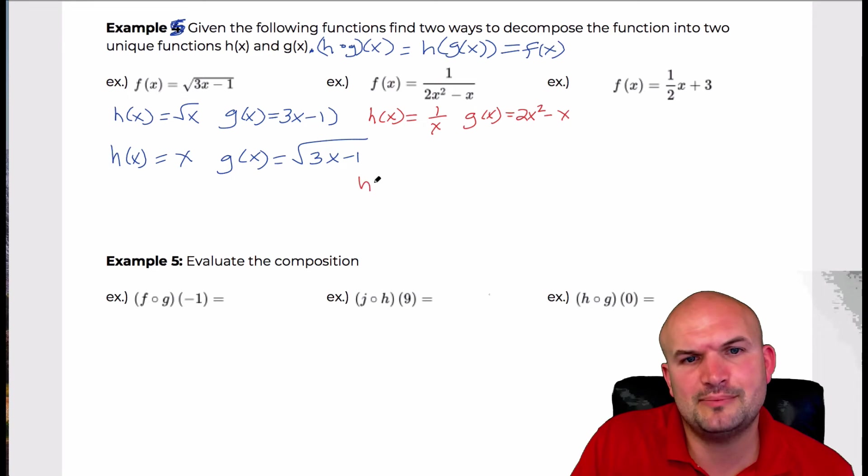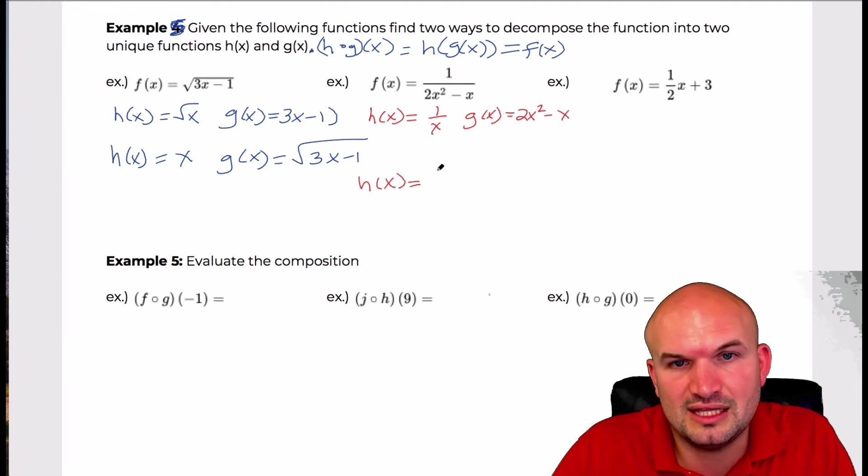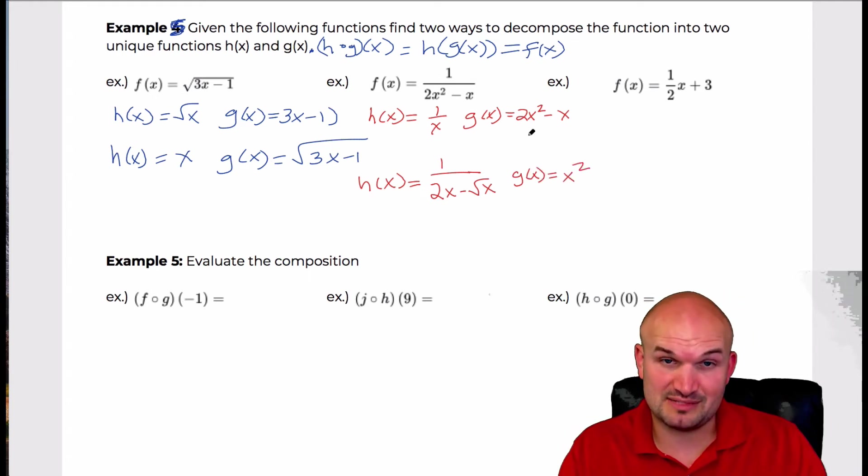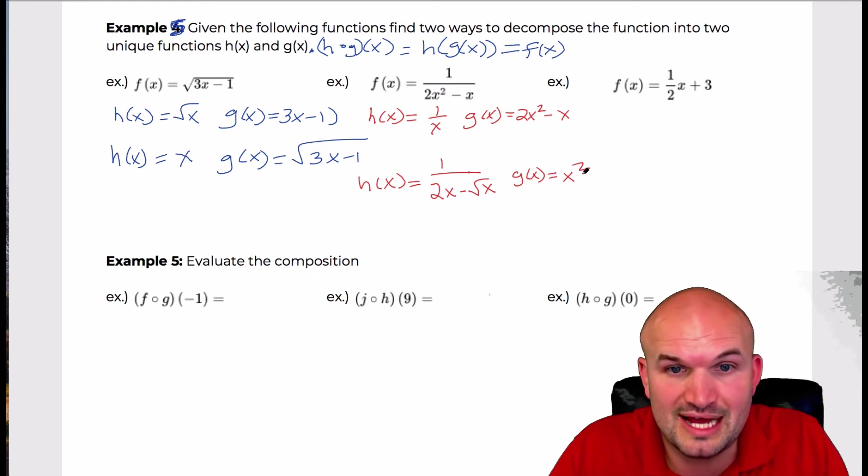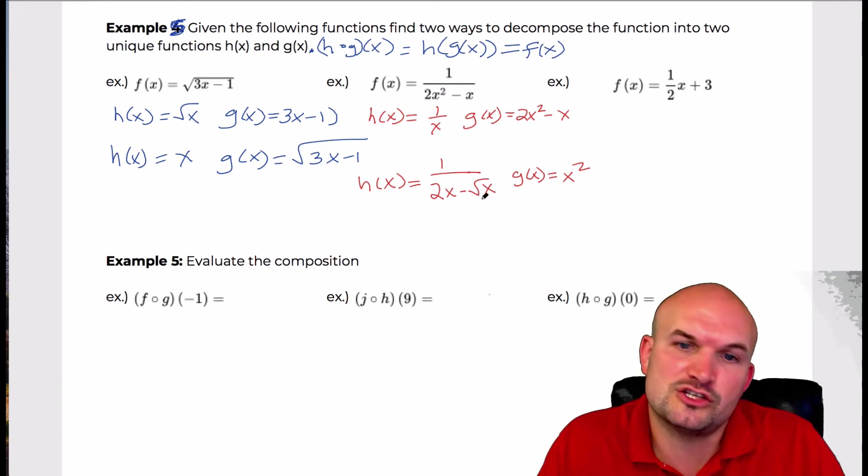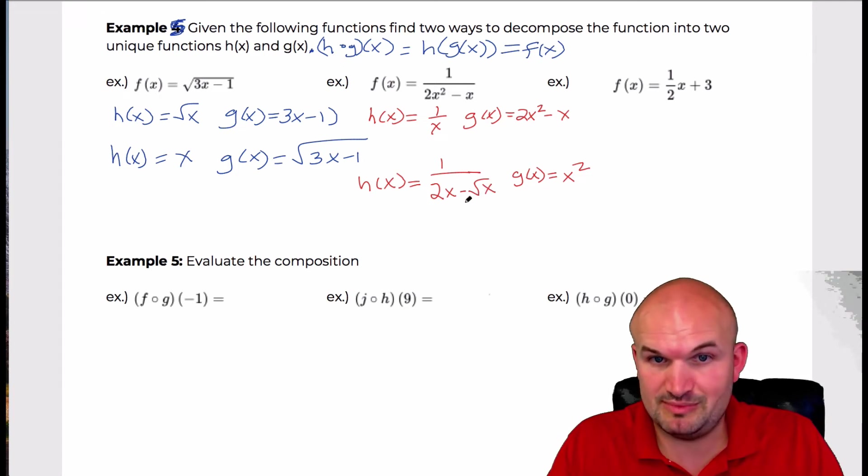We could do another example here, let's have a little fun. Let's play around some numbers, make sure it works. So in this example, I said let's make h of x equal 1 over, let's see what I picked, 2x minus the square root of x. And then let's make g of x equal x squared. Right? So now let's think, let's make sure that this works.